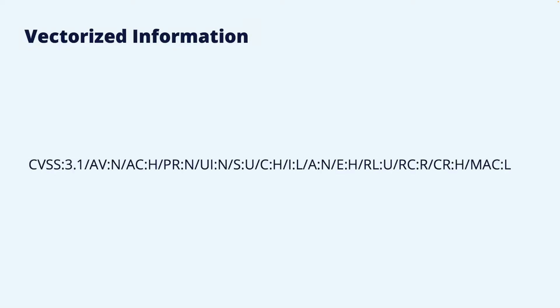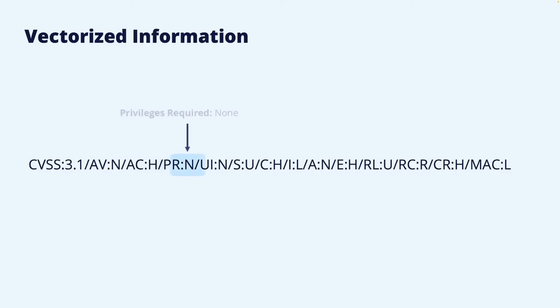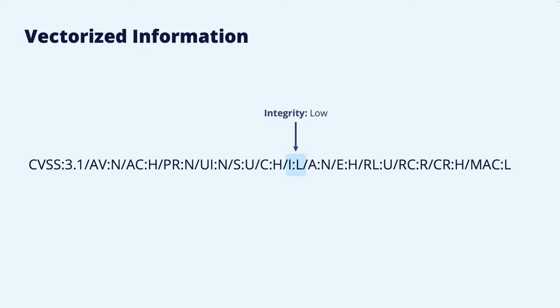It is clear that the CVSS score does not only provide a summary score for the severity of a vulnerability, but also provides quite much information about the vulnerability. To help with transparency, there is a defined vector string that summarizes the underlying metrics and their values for a given vulnerability and CVSS score. The vector string for the example used here defines that CVSS 3.1 has been used for scoring the vulnerability, with base metric values of: attack vector — network, attack complexity — high, privileges required — none, user interaction — none, scope — unchanged, confidentiality — high, integrity — low, availability — none.